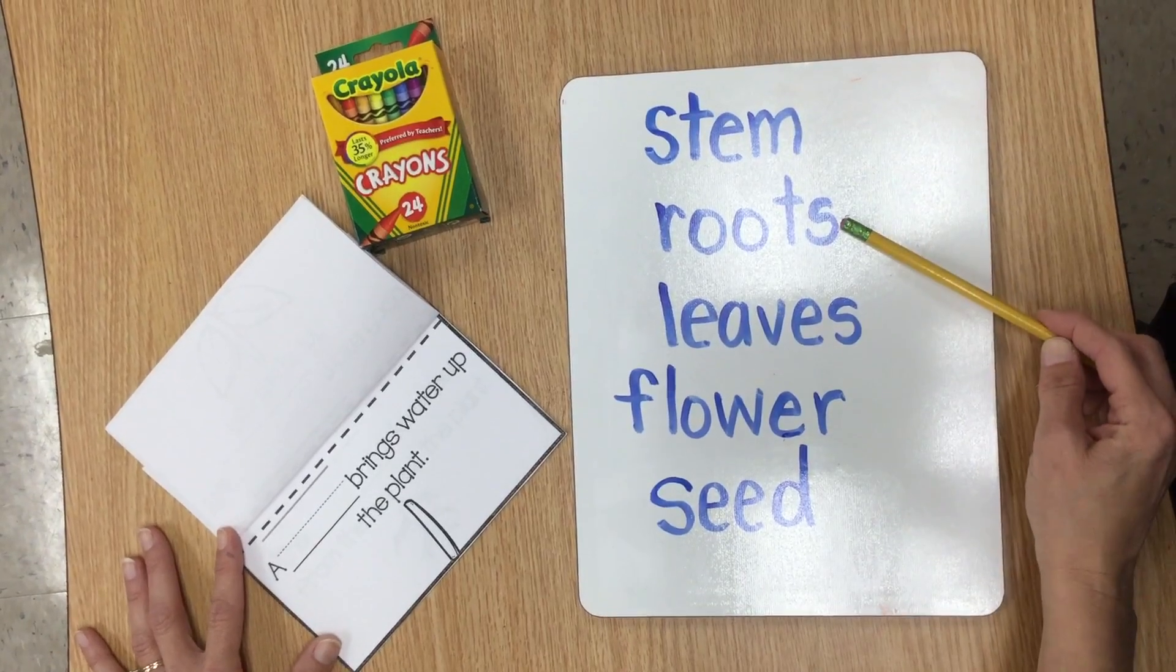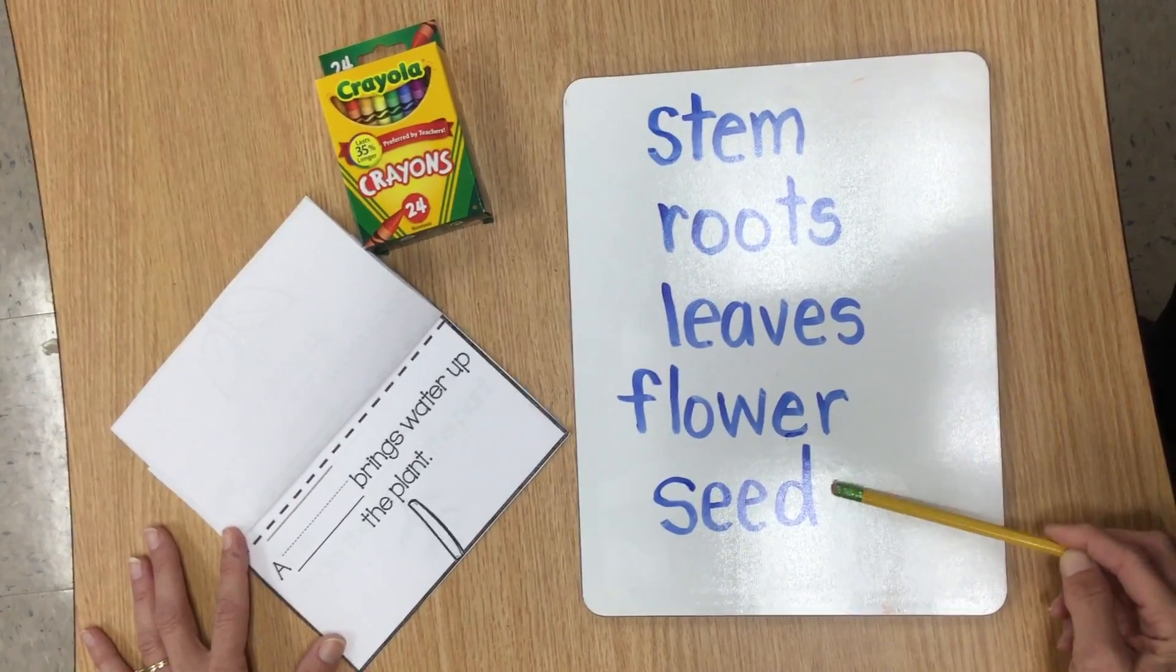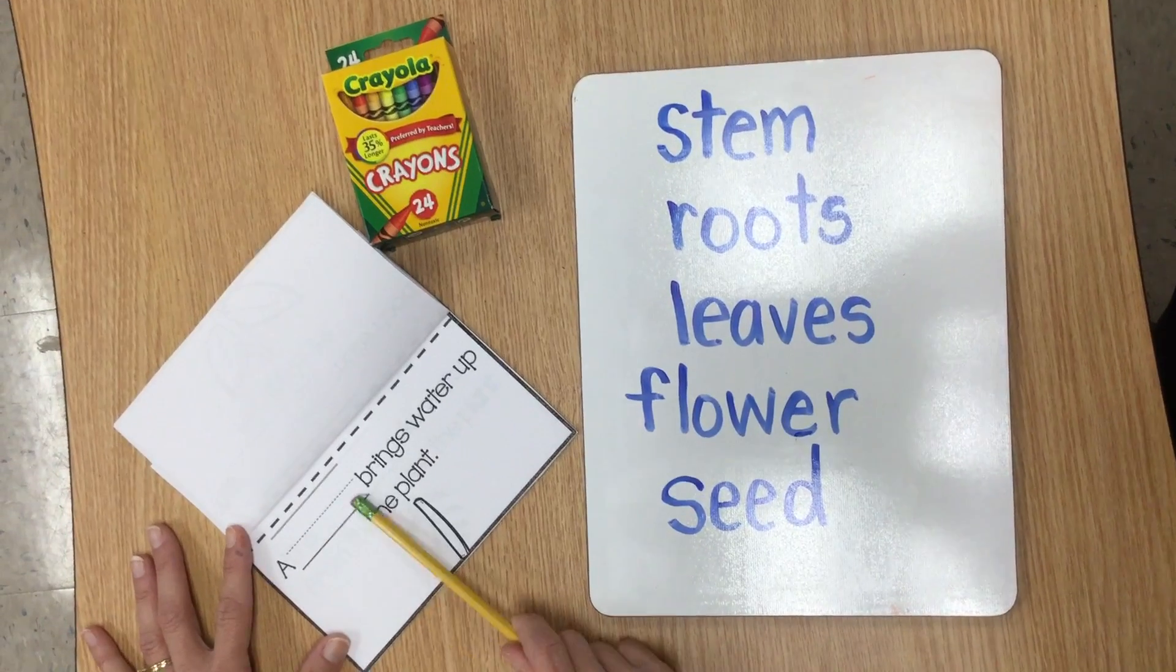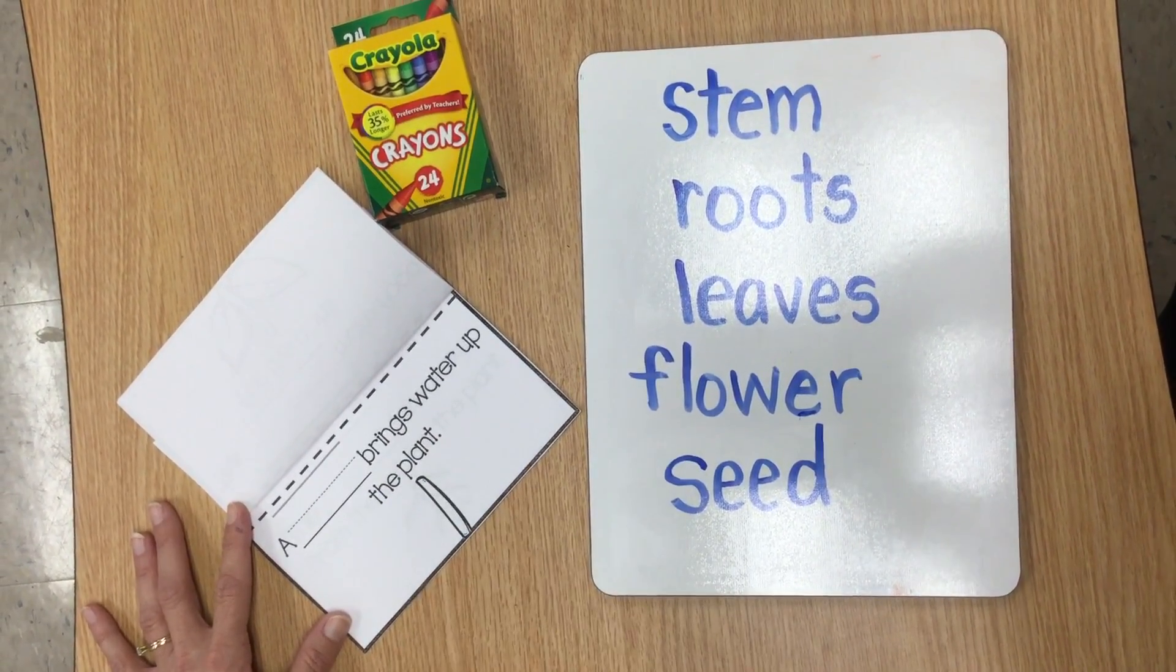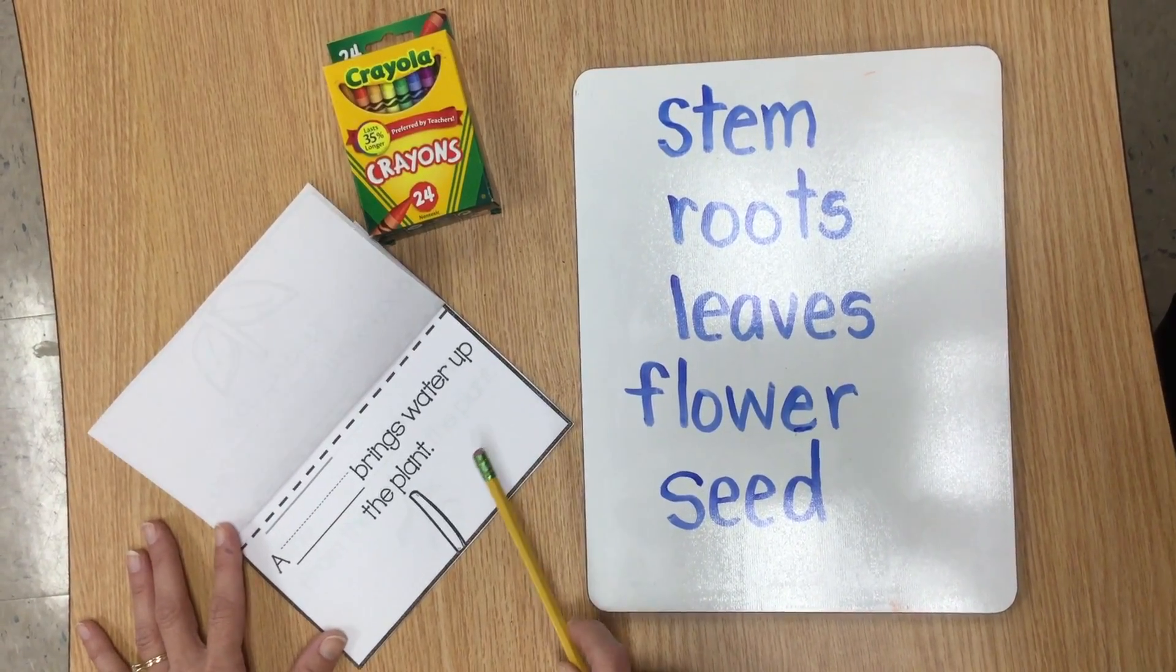Stem, roots, leaves, flower, seed. Write the word that would complete this sentence: A blank brings water up the plant. And then color your picture. Go ahead and pause.